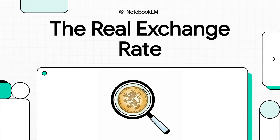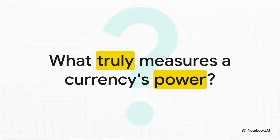You know when you see a currency exchange rate on the news? Well, you might think that number is the whole story, but it's not, not even close. Today, we're going to pull back the curtain and look at the hidden number — the one that tells you what a currency's real purchasing power is. So if that daily number isn't the full picture, what is? What's the measure that cuts through all the noise to tell us what one currency can actually buy compared to another? That's exactly what we're going to get into.